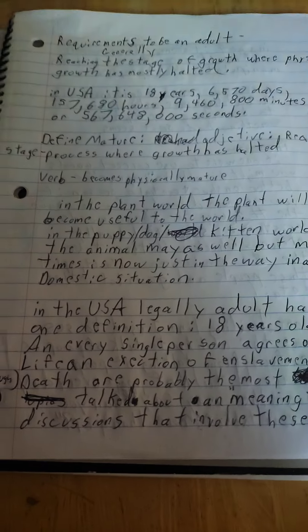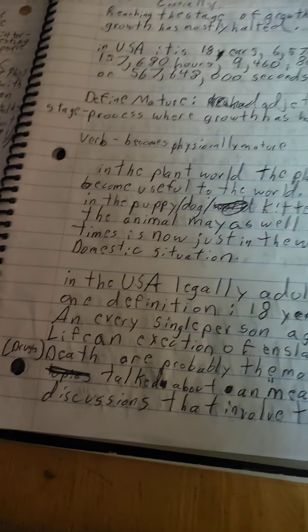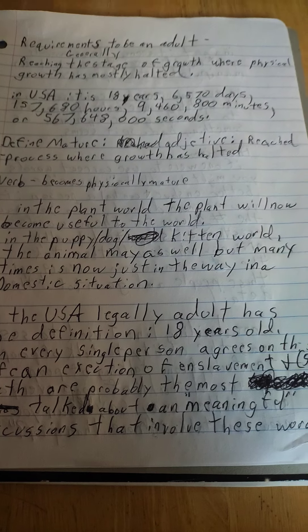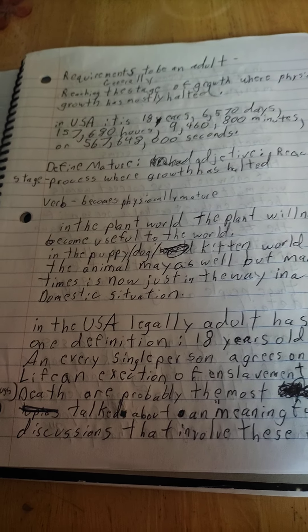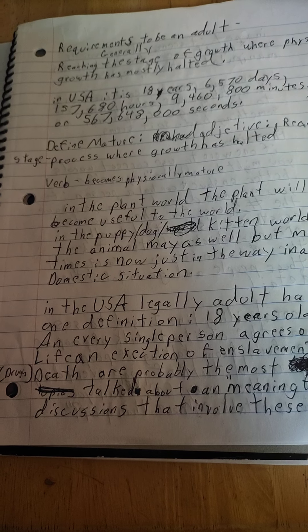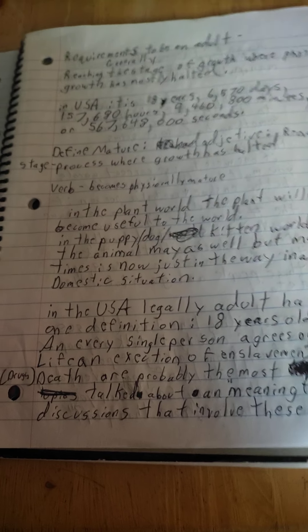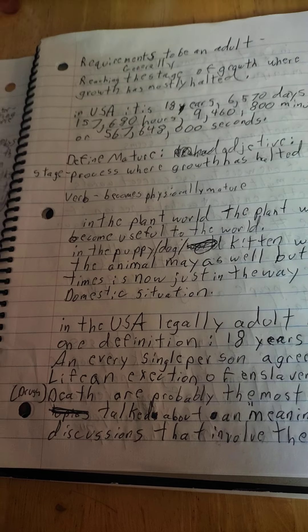So I'm going to continue from part one. In the USA, legally adult has one definition: 18 years old, and every single person agrees on this.